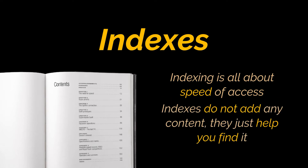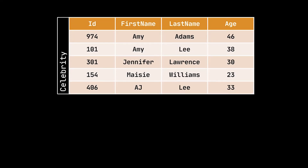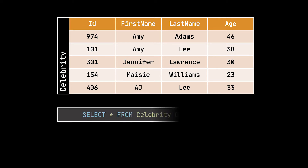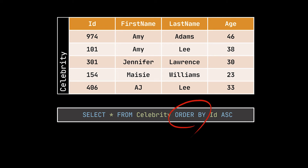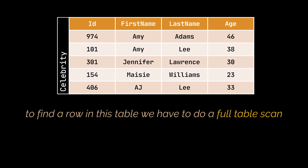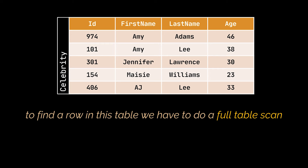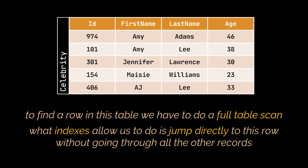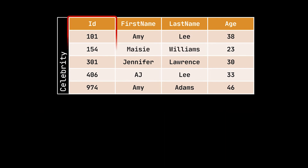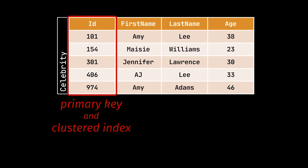Indexing is all about speed of access. Indexes do not add any content, they just help us find it. When a table is created initially and rows are added to it, these rows do not have a specific order, they are kind of all over the place. It is with the use of the ORDER BY keyword that the ordering of the records is decided. The primary key helps us find a unique row, and to find this row we'll have to go through all the records of our table, or do what we call a full table scan. However, what indexes allow us to do is jump directly to this row without going through all the other records.